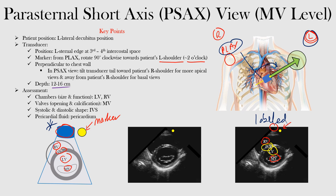For assessment, we look at the chambers: the left ventricle, the right ventricle, the mitral valve, and the interventricular septum between them. You can also assess for any pericardial fluid surrounding the heart in the setting of an effusion.